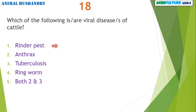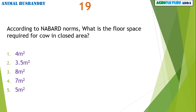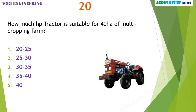Which of the following is a viral disease of cattle? Rinderpest. According to norms, what is the floor space required for cow in a closed area? 3.5 square meters.